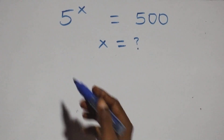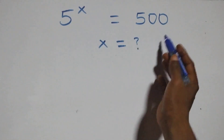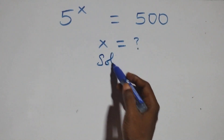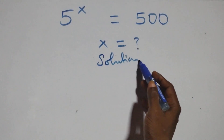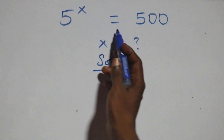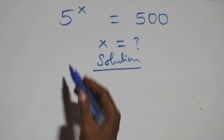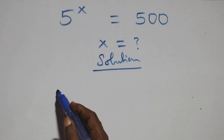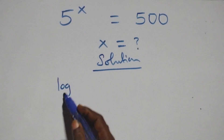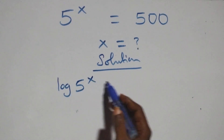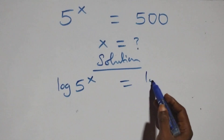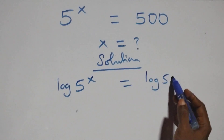Hello, you're welcome. How to solve this nice exponential equation. What we have here is 5 raised to power x equals to 500. We take the log on both sides, that is we have log 5 raised to power x equals to log 500.